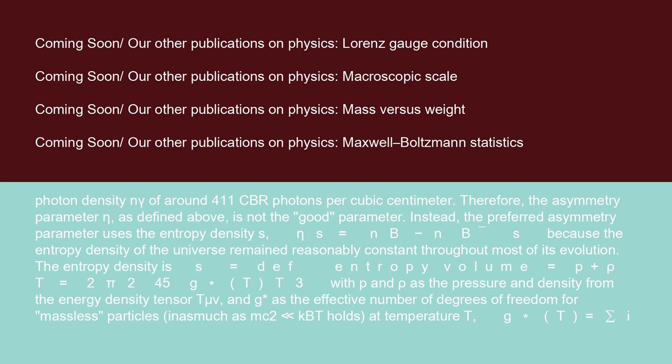Therefore, the asymmetry parameter η, as defined above, is not the good parameter. Instead, the preferred asymmetry parameter uses the entropy density S: ηS = (nB - nB̄)/S, because the entropy density of the universe remained reasonably constant throughout most of its evolution. The entropy density is S = (∂E/∂T)V = (P+ρ)/T = (2π²/45)g*(T)T³, with P and ρ as the pressure and density from the energy density tensor Tμν, and g* as the effective number of degrees of freedom for massless particles, inasmuch as mc² ≪ kBT holds.